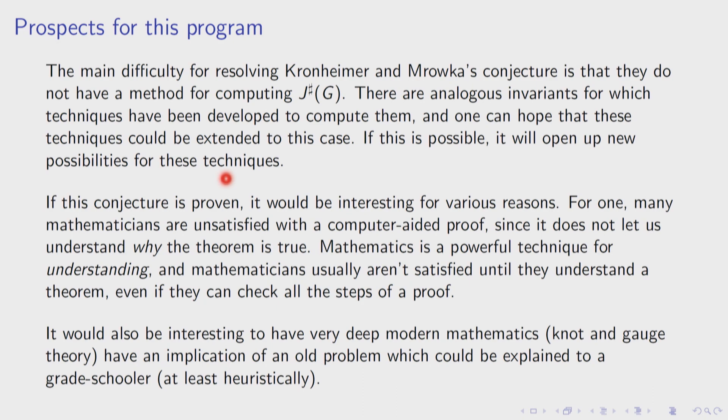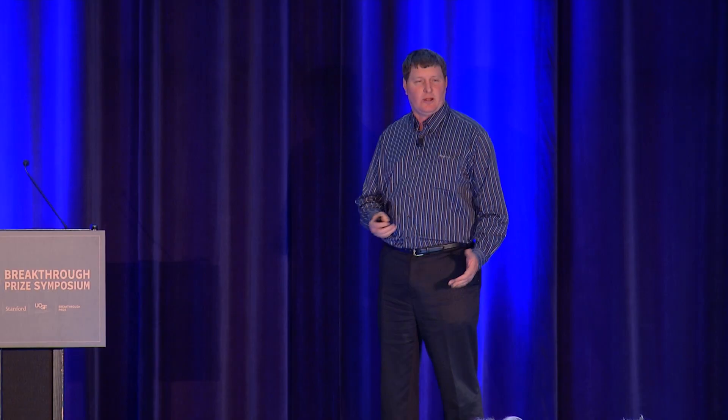It would also be interesting because mathematicians really want to understand why theorems are true, not just that they are true. Having a computer-aided proof requiring huge case-by-case analysis doesn't necessarily give you a lot of understanding — maybe eventually it will to AI or machines, but mathematicians are not very satisfied with that sort of proof, even though it was a great accomplishment. It would also be interesting to have deep modern mathematics of gauge theory and three- and four-dimensional topology imply something about an old problem in two dimensions of coloring maps. Hopefully this conjecture will be resolved one way or another in the near future.